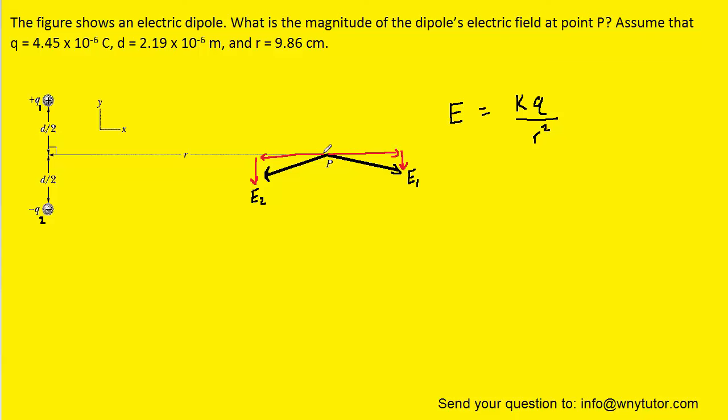We can see from the diagram that the X component of E1 which is pointing to the right is going to cancel with the X component of E2 which is pointing to the left. Because they cancel, we can basically take them out of the problem. The only components that matter will be the Y components.